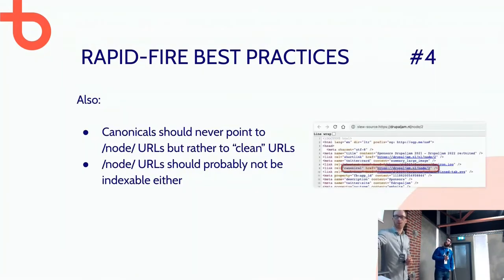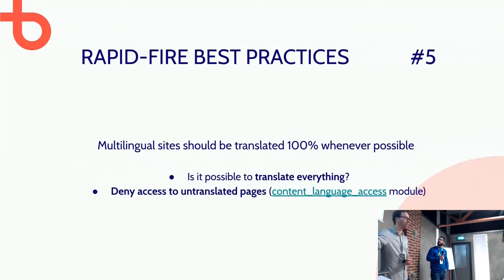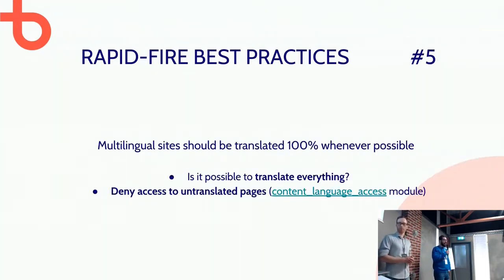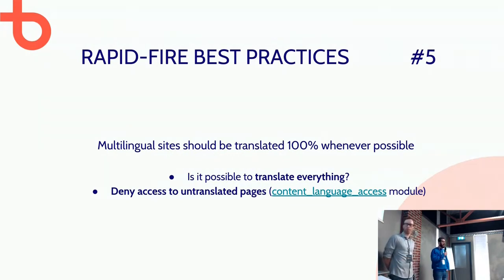There are some official Google resources listed here. Also note that canonical tags should never point to node URLs — which also happens quite often — and node URLs in general should not be indexable either.